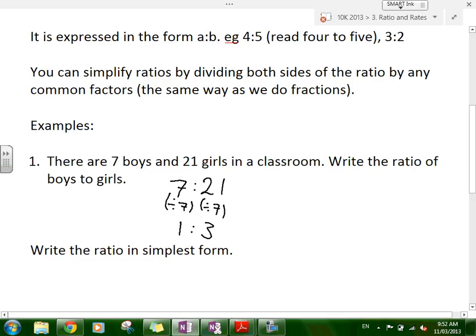So what this is telling us is that for every 1 boy in a class, there's 3 girls. So that's what the ratio is telling us. For every 1 boy, there's 3 girls. Or another way to say it is for every 7 boys, there's 21 girls. But I think this is more useful. You can see that for every 1 boy, there's 3 girls.